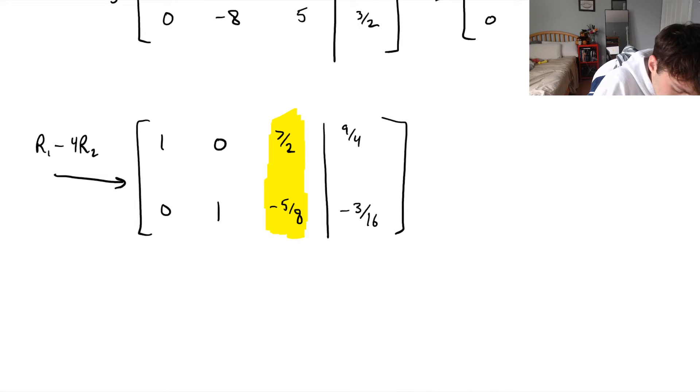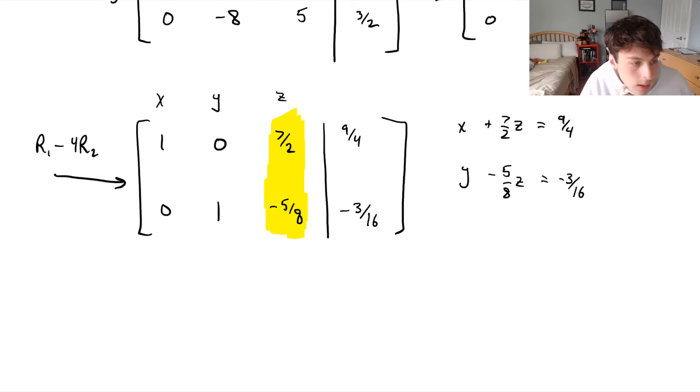So let's write out, well, we know that this is our z column. So our equations are going to be, from row 1, we get 1x plus 7 over 2z is equal to 9 fourths. And from the second row, we get y minus 5 eighths z is equal to minus 3 sixteenths. We're reading this directly off of our matrix here from reduced row echelon form, because our first column is x, our second column is y, our third column is z, and then that vertical line is just that imaginary line representing our equal sign. So we're just reading off the rows and turning it back into a similar system of equations.